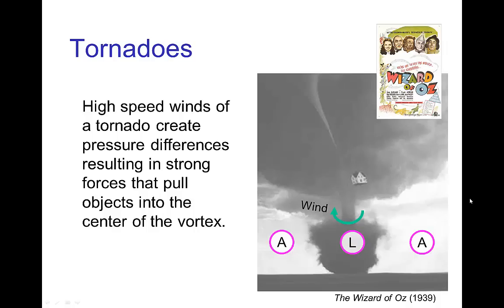A more dramatic example of this kind of suction due to a fast-moving air stream is a tornado, which creates low pressure toward its center where the wind is going fastest. That actually pulls things into the tornado — and this was a plot device in the original Wizard of Oz movie.